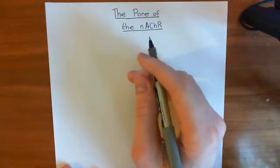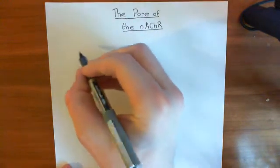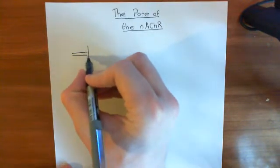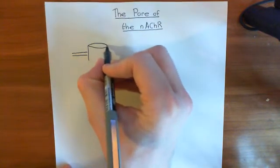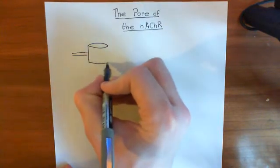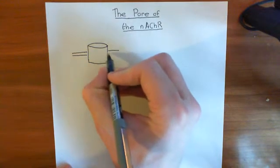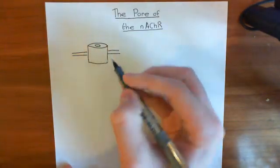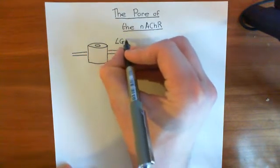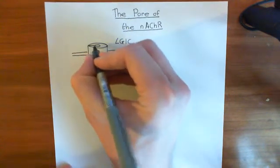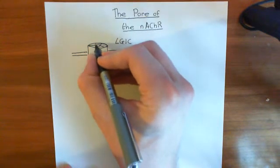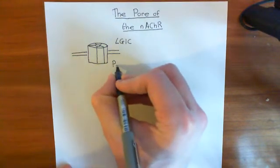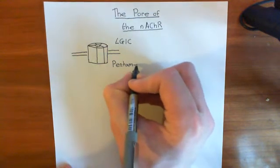We'll begin with a basic overview of the structure of the nicotinic acetylcholine receptor. If we have the plasma membrane — the phospholipid bilayer — and a nicotinic acetylcholine receptor embedded in it, there is a pore down the middle. This receptor is a ligand-gated ion channel, often abbreviated to LGIC, and it's made up of five proteins. It's what's known as a pentamer — a structure made up of five constituent subunits.